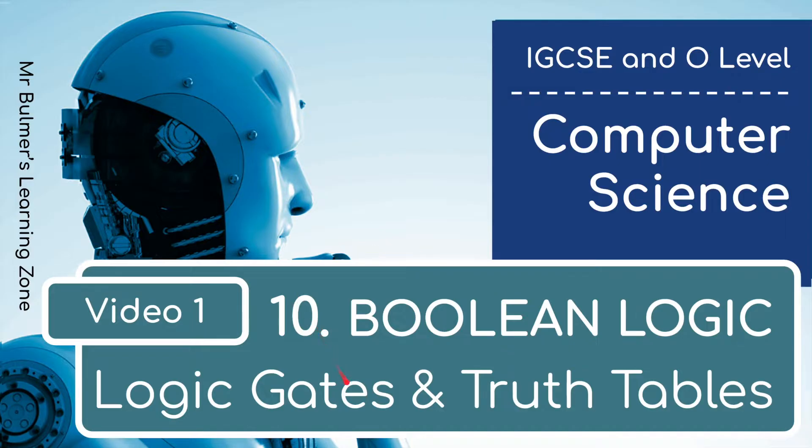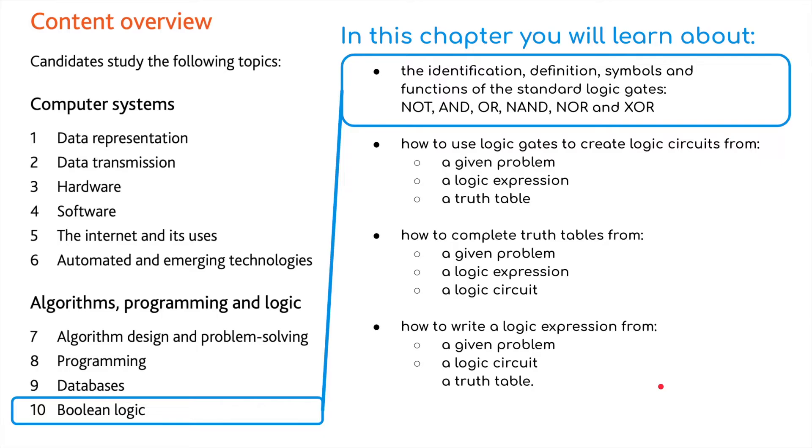In this video we're going to be looking at logic gates and truth tables. It's split up into four parts. We'll be looking at six of the standard logic gates: the NOT gate, the AND gate, the OR gate, the NAND, the NOR, and the XOR.